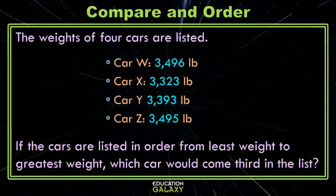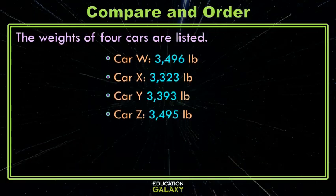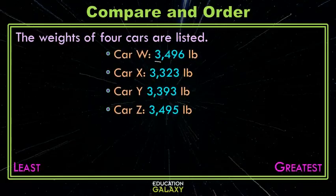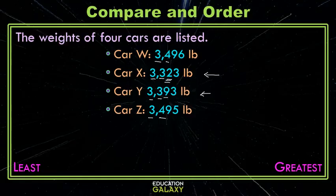One last example. Here I have the weights of four cars, and we want to order them from least to greatest and find out which one is third in the lineup. We're going to start with our leftmost place value, which is the thousands. They're all the same, so that doesn't help us decide, so we move to the hundreds, where I have a four, a three, a three, and a four. The ones that have threes in the hundreds place are smaller than the ones that have fours. Now I move to the tens place, where I have a two and a nine. Two is smaller than nine, which makes this number the smallest of them all, so let's put it on the left side.